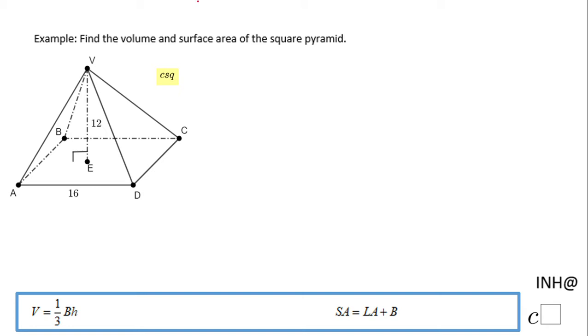The first one, V equals 1 over 3—very important, that 1 over 3—B stands for the area of the base and H stands for the height. And as I said, the base is a square, so the area of the base will be the side of the square squared.